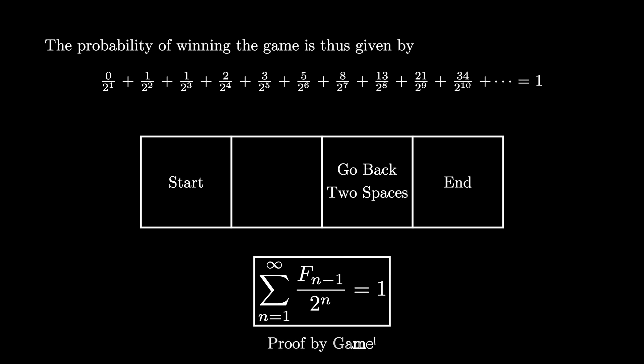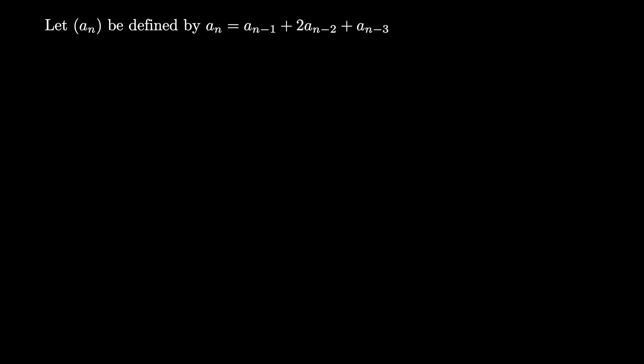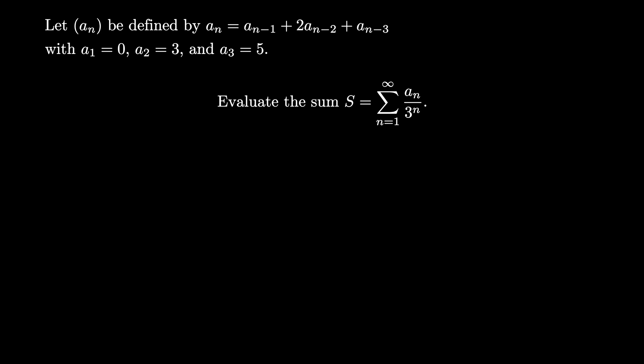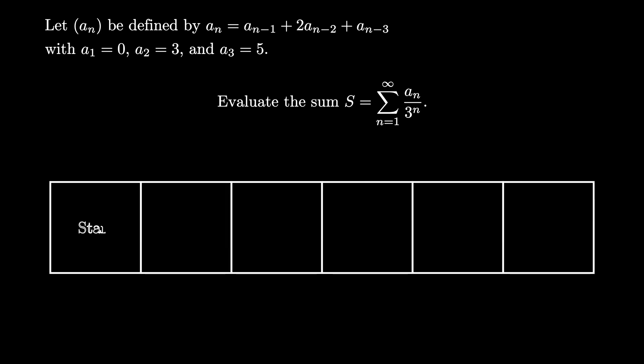It's amazing that this Fibonacci-weighted infinite sum equals 1, just like the sum of the powers of 1/2 — and more amazing that we proved it using a simple board game. This makes me wonder if there are other infinite series you can evaluate using a board game. For example, consider the sequence a_n defined recursively as a_n = a_(n-1) + 2·a_(n-2) + a_(n-3), with a_1 = 0, a_2 = 3, a_3 = 5. Can you evaluate the infinite sum from n=1 to infinity of a_n / 3^n using a board game argument? Here's a hint: can you use a six-spot board game to find the sum?